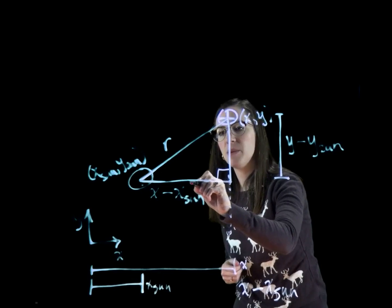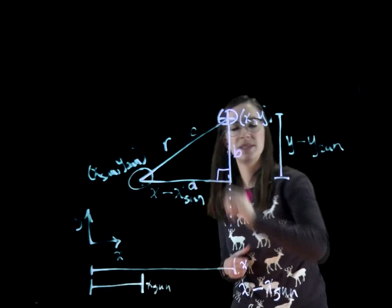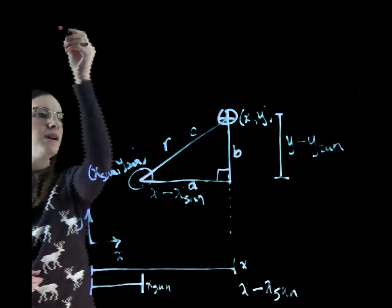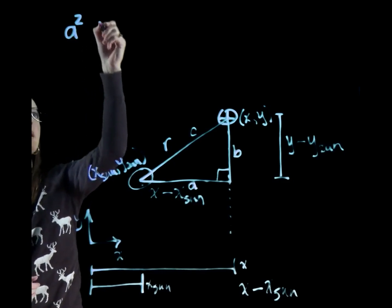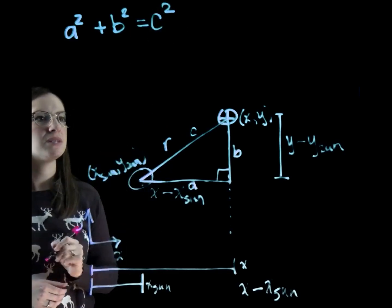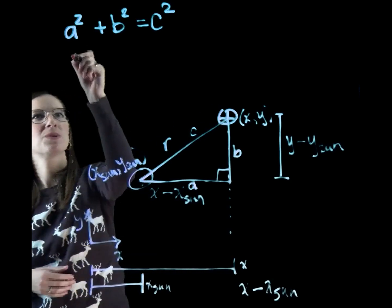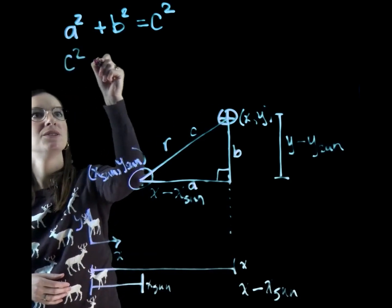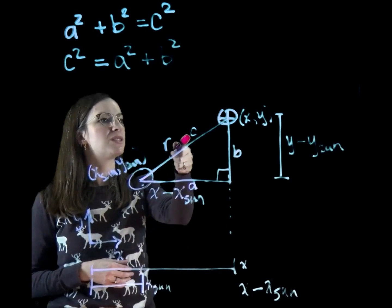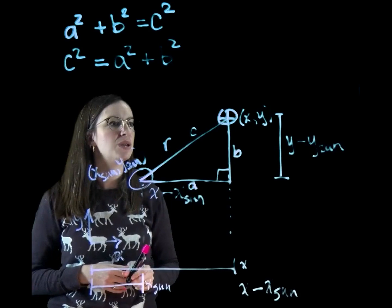But you might label this triangle A, B, and C. So this is getting a little messy here. So I'm going to come up here. And remember that A squared plus B squared equals C squared. So this is our Pythagorean theorem. We're going to just rearrange this real quick and do C squared equals A squared plus B squared. And in this situation, C is our hypotenuse or our distance between our two astronomical bodies.